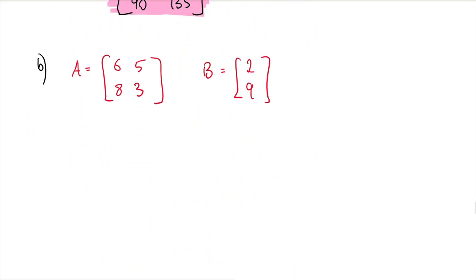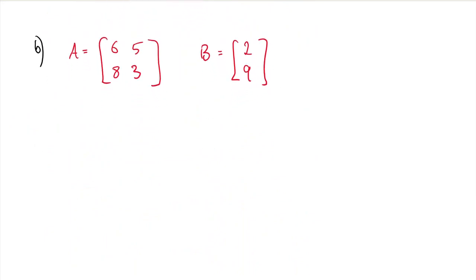And the other one B, like we did in part A. We're going to first figure out whether this product matrix exists or not. To do that, we have to find the order of each matrix.